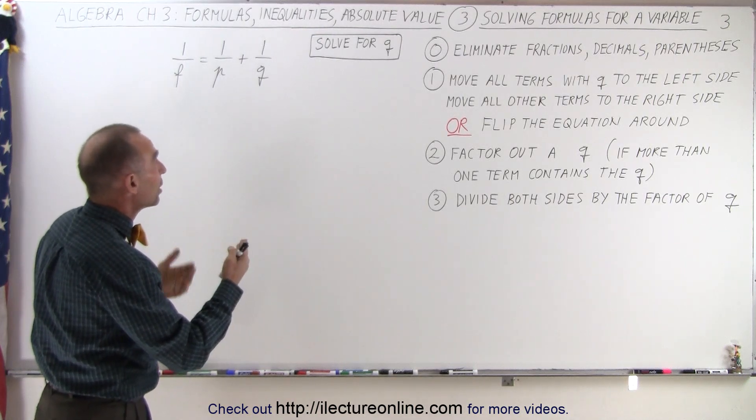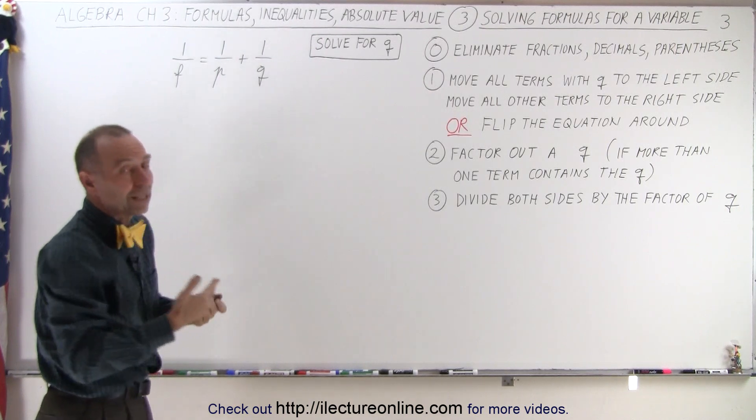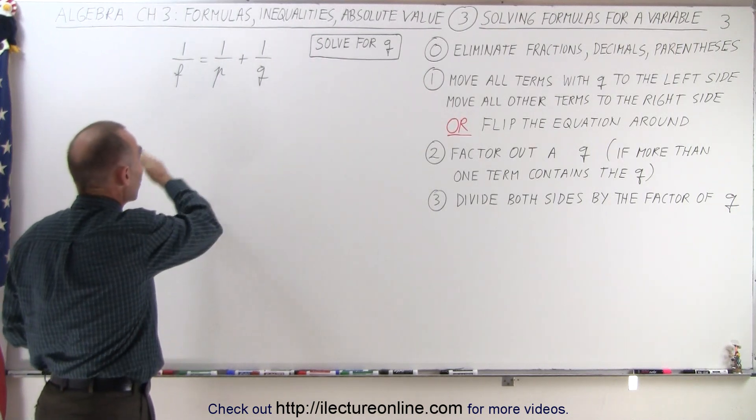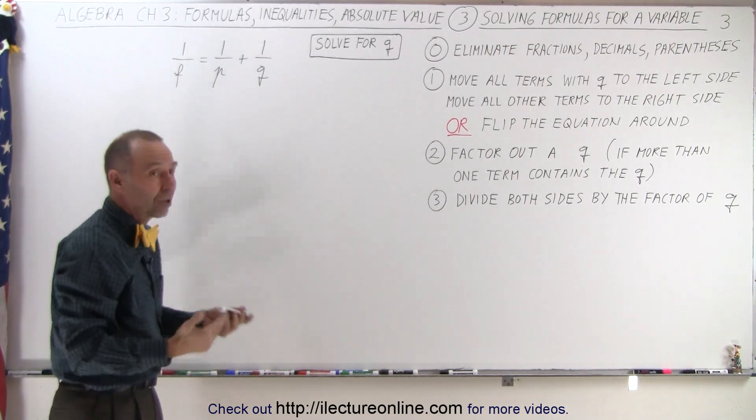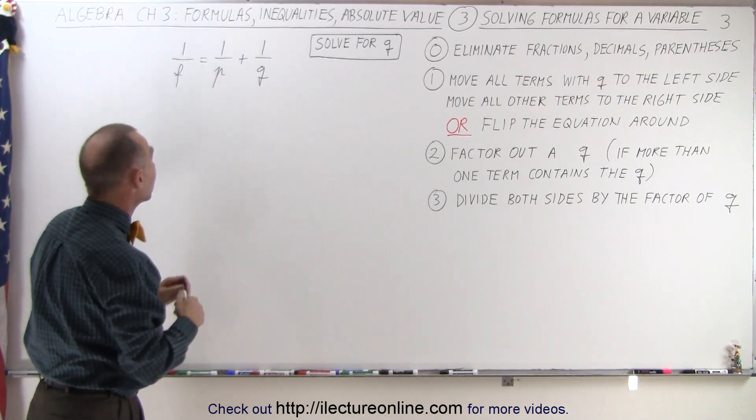But all we need to do here is solve this particular equation for Q. So first, in order to eliminate the fractions, we're going to multiply both sides of the equation by the lowest common denominator, which is going to be a product of all three denominators.